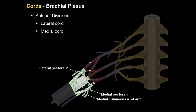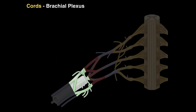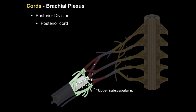The posterior divisions from all three trunks form the posterior cord, which is deep to the axillary artery. The posterior cord has three branches: the upper subscapular nerve innervating the subscapularis muscle, the thoracodorsal nerve innervating latissimus dorsi, and the lower subscapular nerve innervating the subscapularis muscle and teres major.